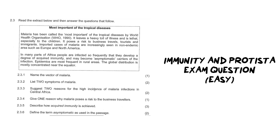It says malaria has been called the most important of the tropical diseases by the World Health Organization in 1990. It leaves a heavy toll of illness and is lethal especially to children. It poses a risk particularly to business travelers, tourists and immigrants. Imported cases of malaria are increasingly being seen in non-endemic areas — non-endemic means the particular disease is not from that area and shouldn't be found there — specifically Europe and North America. So we are seeing malaria in Europe and North America where we shouldn't, probably due to business travelers and tourists accidentally bringing mosquitoes across in their clothing, luggage, or perhaps on animals in boats.